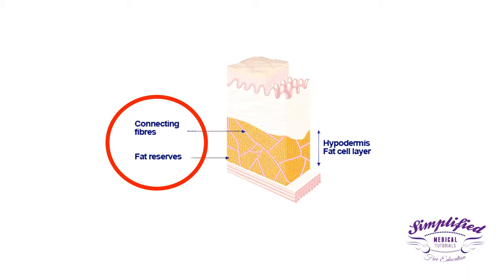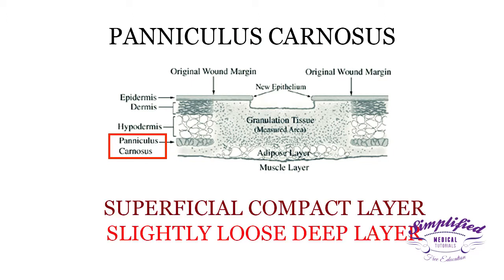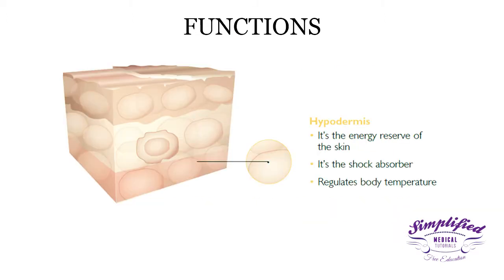Paniculus carnosis is a sheath of dermal muscle lying beneath the superficial fascia. It divides the fatty section into a superficial compact layer and a slightly loose deep layer.